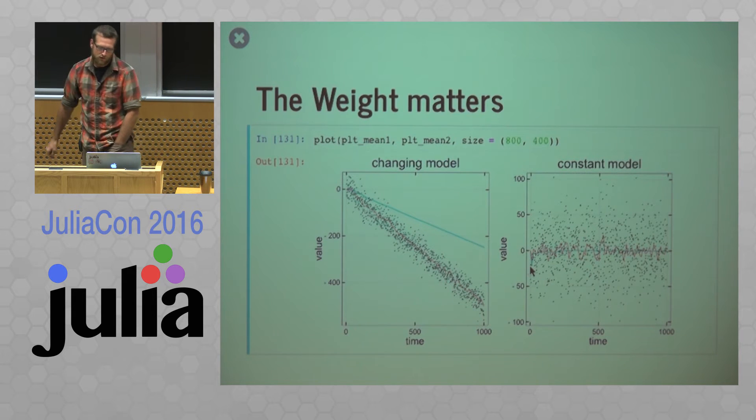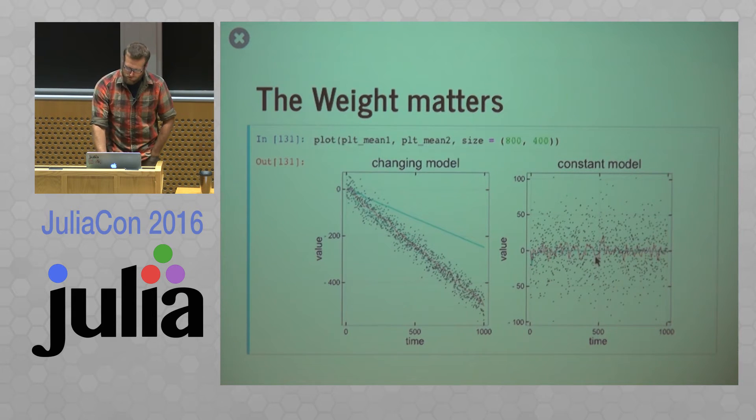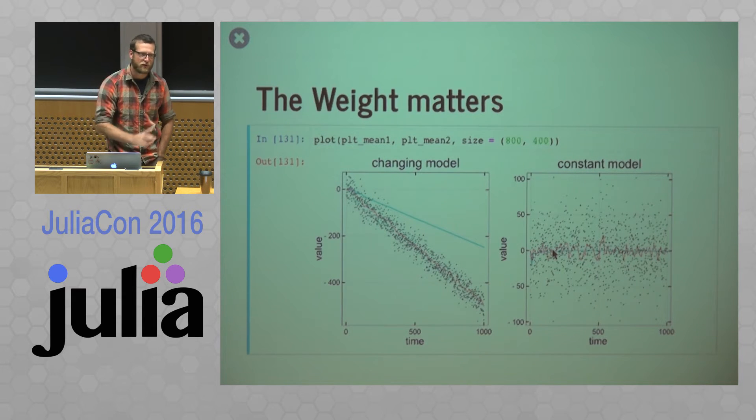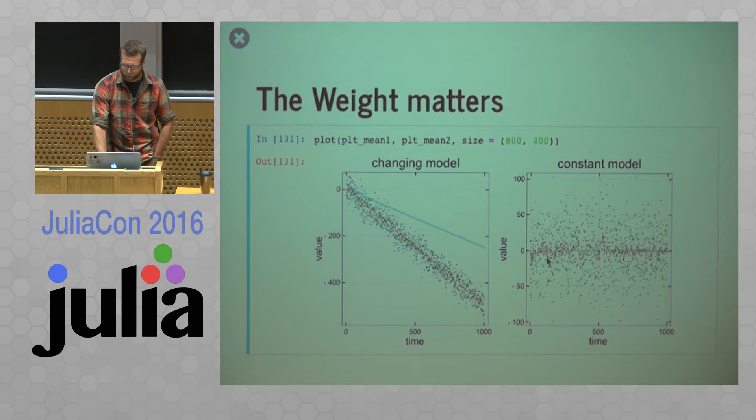In contrast, if we have a constant model, our equal weight is going to perform better. So by the end of this, our blue line in here, which is our equally weighted mean, we have a very nice estimate. So this thing doesn't vary very much. As opposed to our red line, which is our exponentially weighted mean, this thing is still kind of bouncing around a lot because the more recent observations are having high influence.